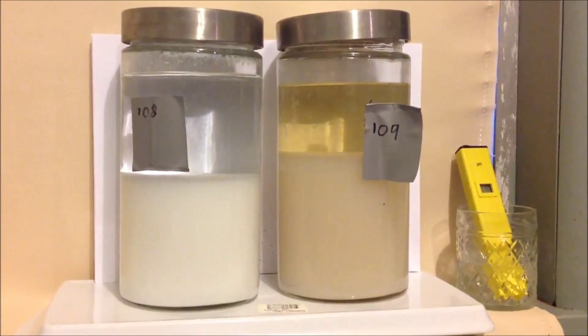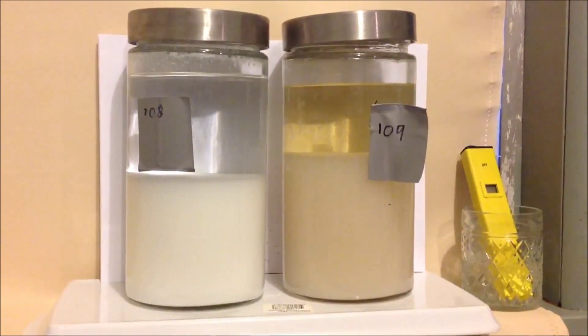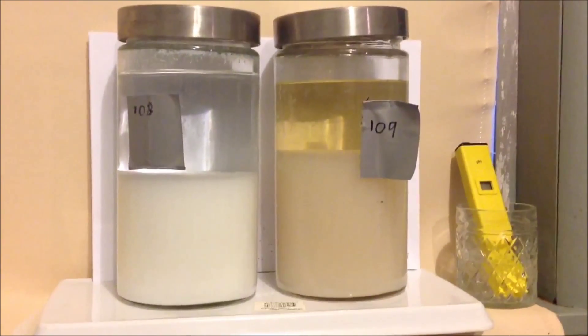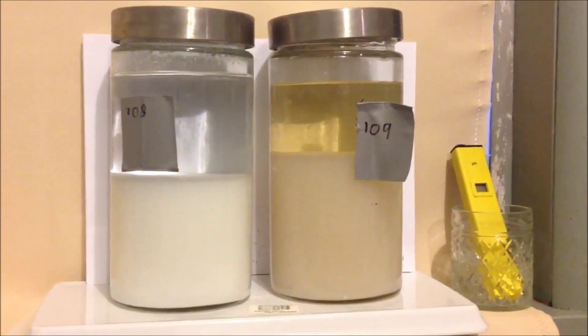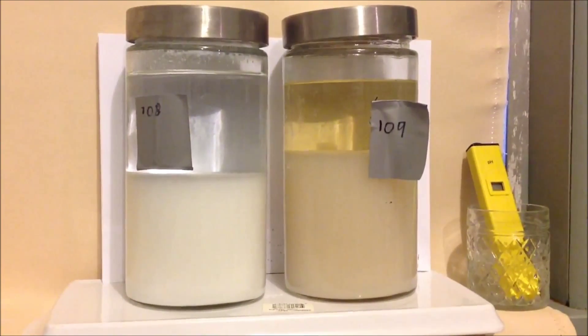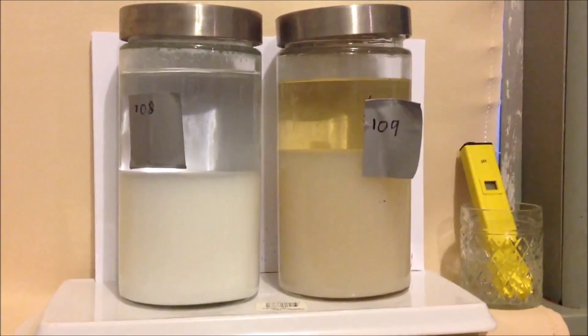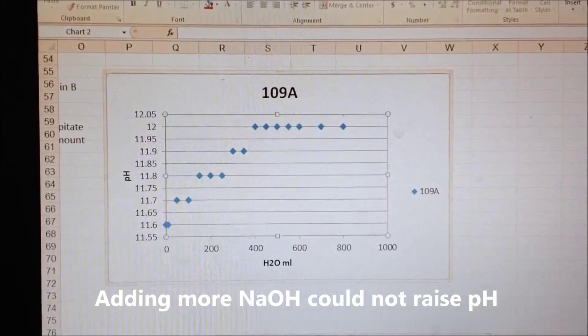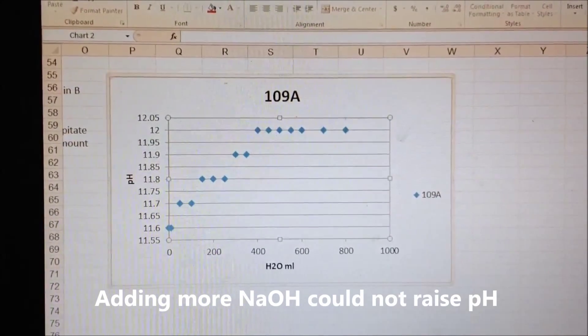The one on the left is regular Dead Sea Salt precipitate for comparison. The one I've been working on is 109. I'm trying to push 150 mil of precipitate to pH 12, and this is the graph showing the resistance at pH 12.